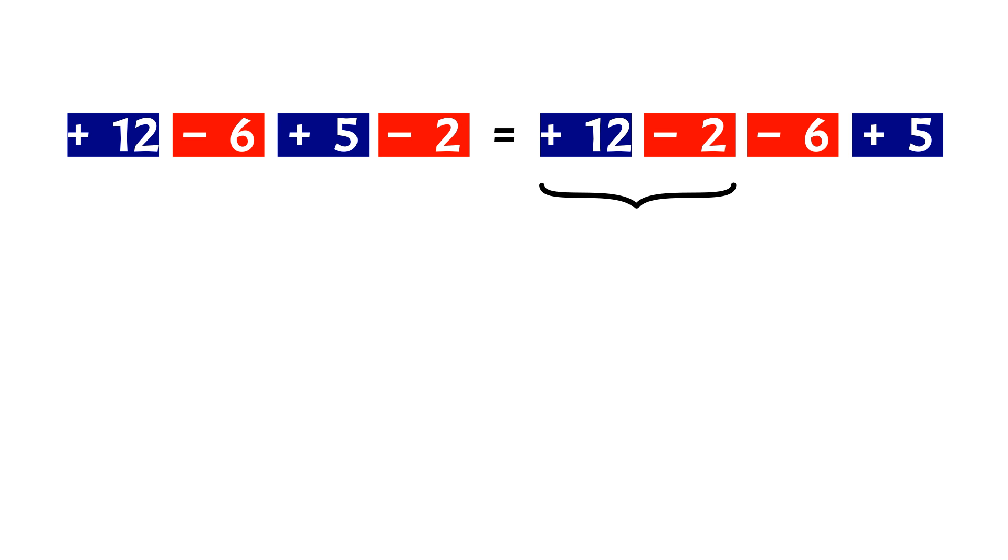Now we don't do the operation on the left. It's just showing the sign of the first number. Addition positive, subtraction negative. The operation that we do is the one between the two numbers. So, let's proceed. The result is positive, so we add addition sign before it.